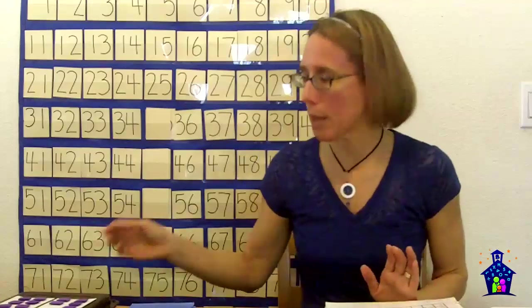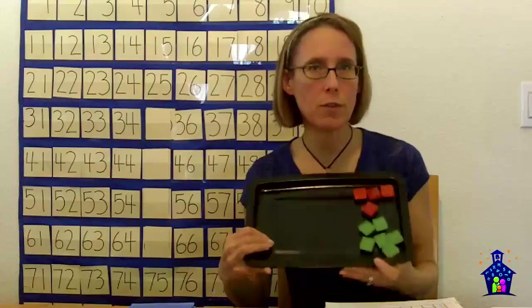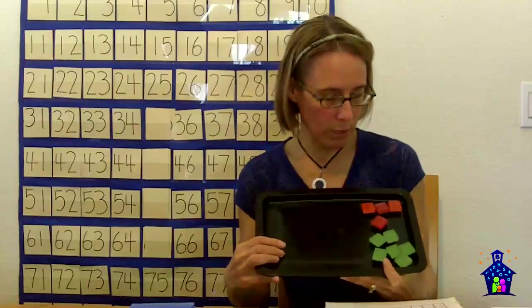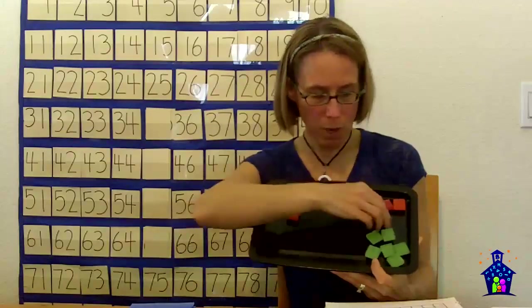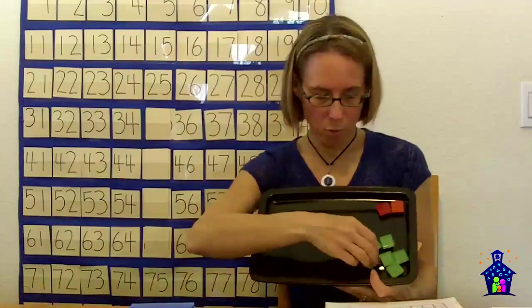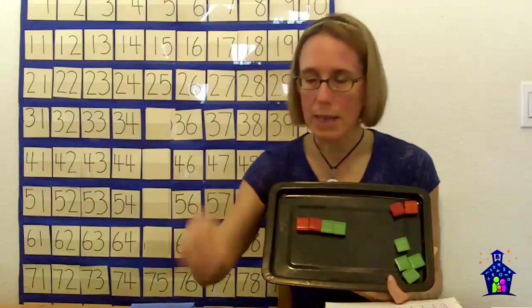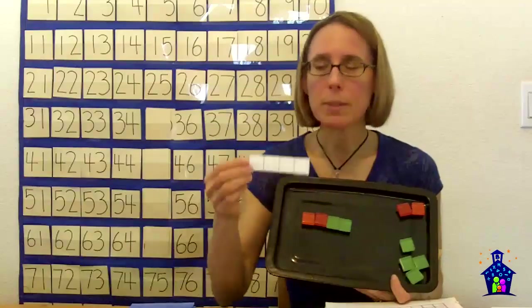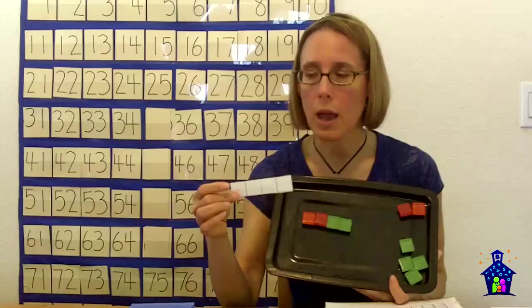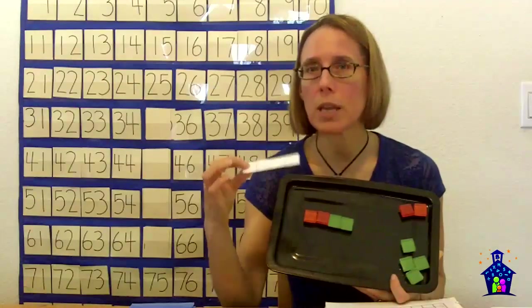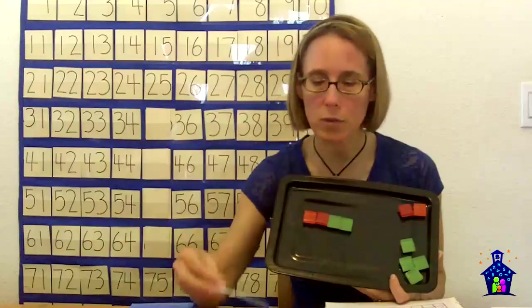This first activity gets kids to understand that numbers are made up of smaller numbers. We're going to do that by coming up with different combinations for a given number using two different colored tiles. Let's say we were working on the number four. One combination would be two orange tiles plus two green tiles, so two plus two equals four.